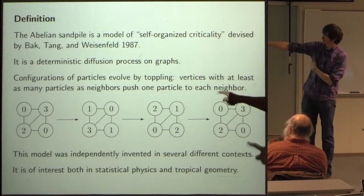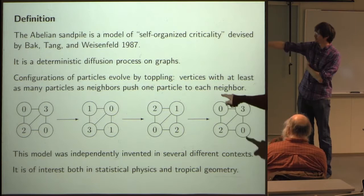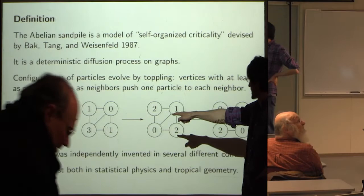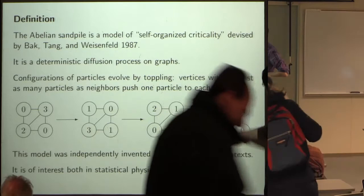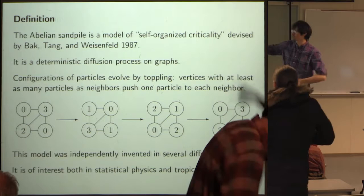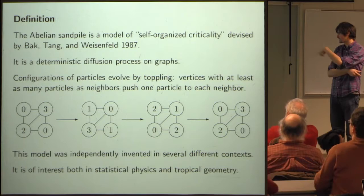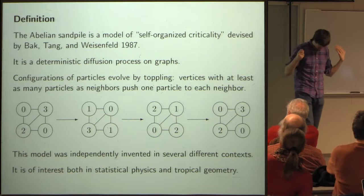Starting with a given configuration of chips, there's exactly one site that has as many particles as neighbors, so it topples — sending one chip to each of its neighbors. After that step, there's exactly one vertex with as many particles as neighbors, so it topples, and now there are two sites which topple, and suddenly we're back in the original configuration. So on this graph with this configuration, there's just some periodic sequence of configurations.